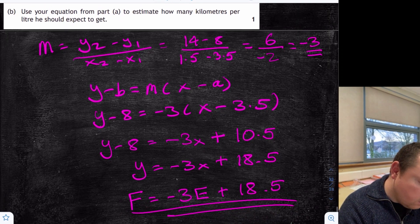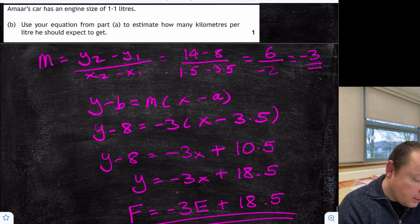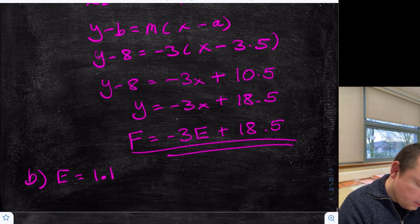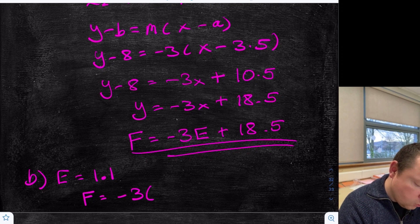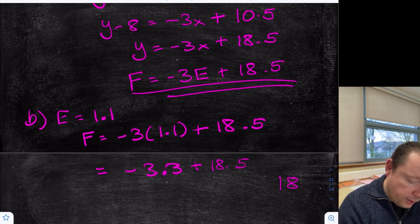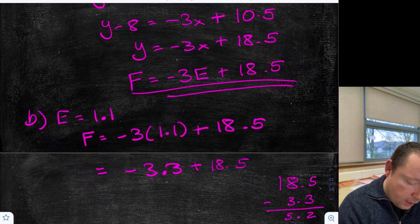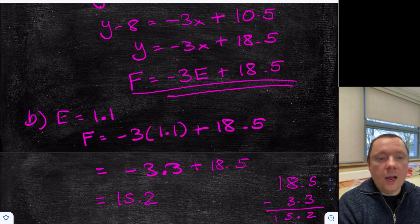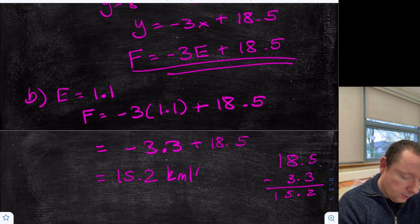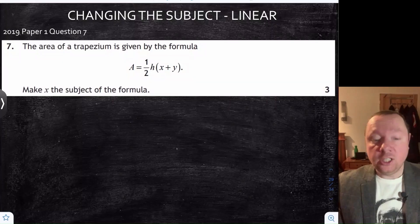Part B uses our equation to find kilometres per litre — that's F — when engine size E equals 1.1. So F equals minus 3 times 1.1 plus 18.5. That equals minus 3.3 plus 18.5. Doing 18.5 minus 3.3: 8 minus 3 is 5, so you get 15.2 kilometres per litre.